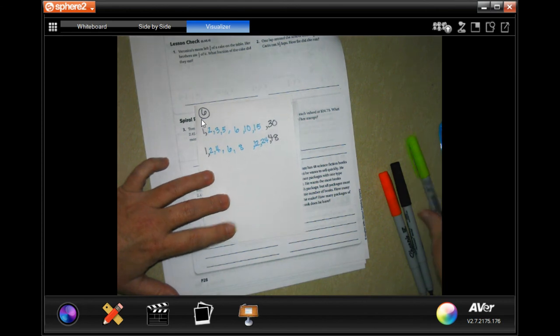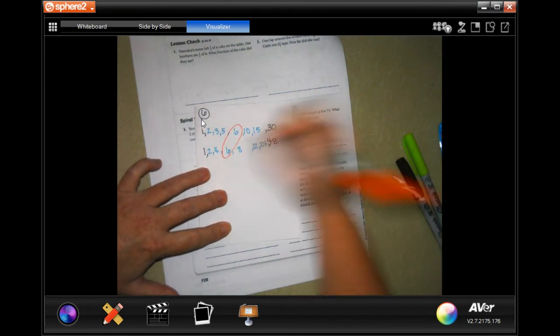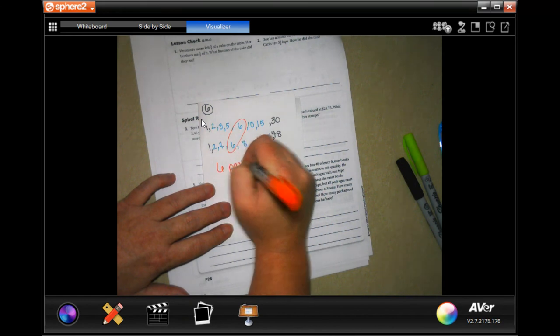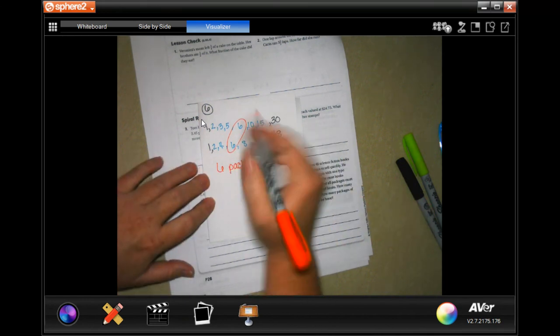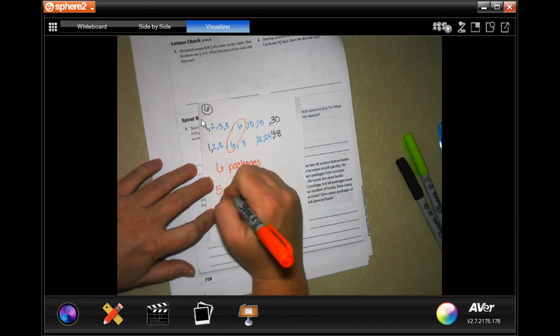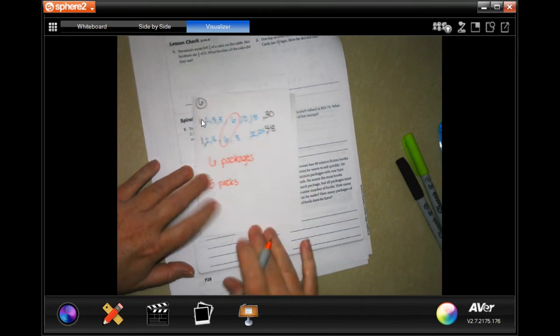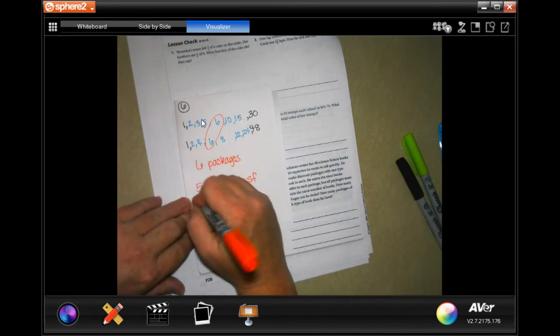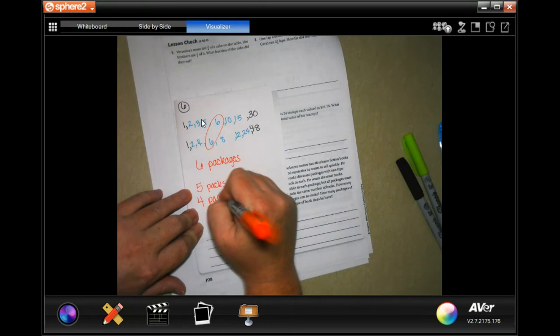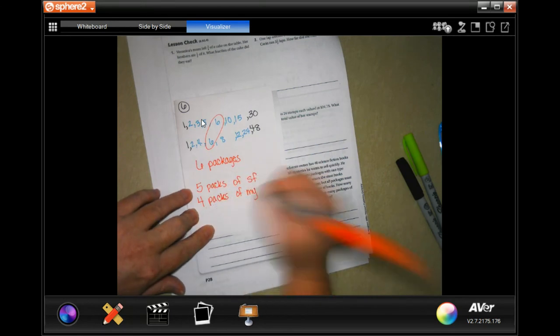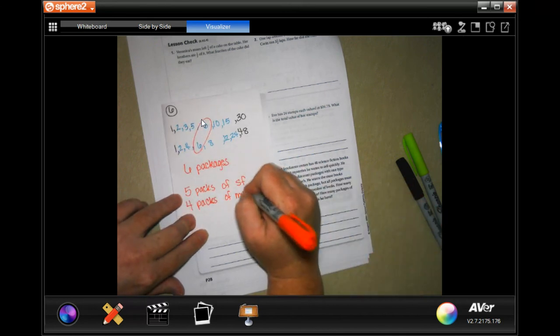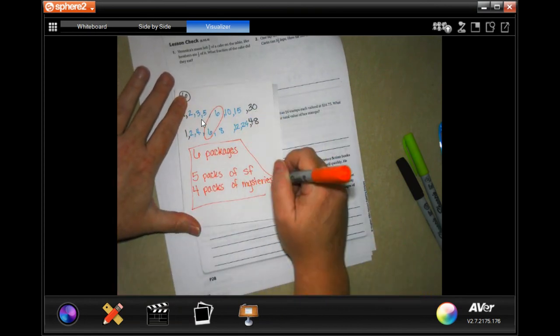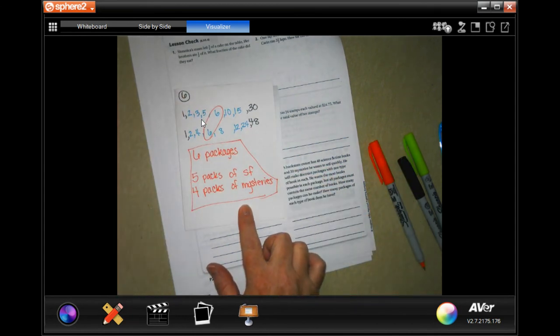It looks like the biggest number we have in common is going to be 6. So 6 packages. And that's 1, 2, 3, 4, 5 packs of science fiction. And 1, 2, 3, 4 packs of mystery. So 6 packages, 5 packs of science fiction, 4 packs of mystery.